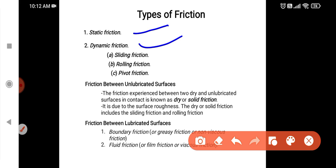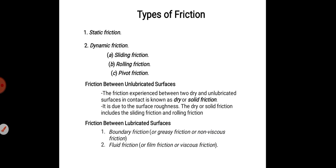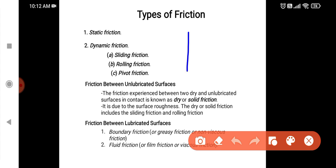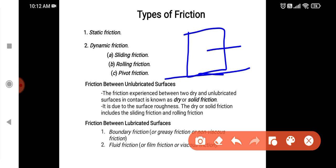We will divide Dynamic Friction into three: Sliding Friction, Rolling Friction, and Pivot Friction. For Static Friction, one object is static. If no force is applied, we will add friction force — that is the friction force, which is static friction. When the object is moving, there is an opposing friction force — this is dynamic friction.